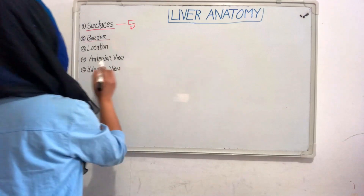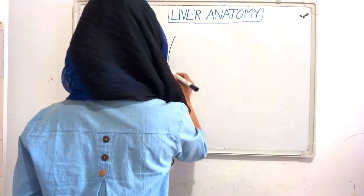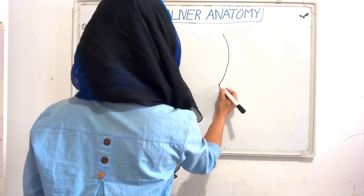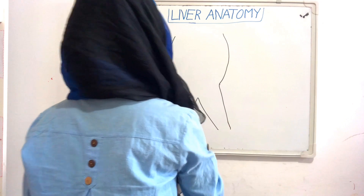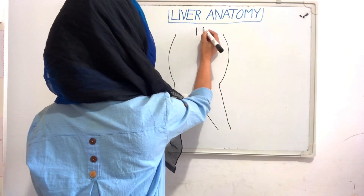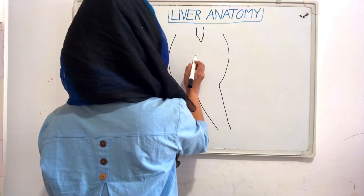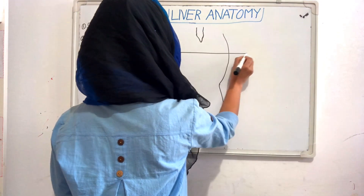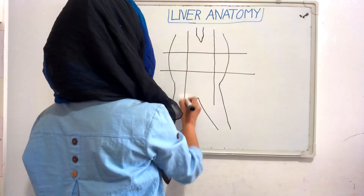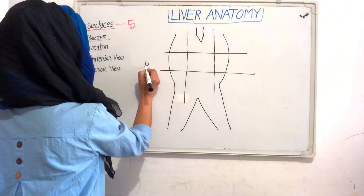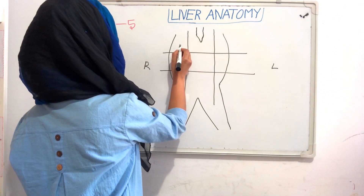Now we will see its location. This is our sternum, this is the xiphoid process of the sternum, and these are the 9 regions of the abdomen. This is the right side of the body and this is the left side. This is the right hypochondrium region.